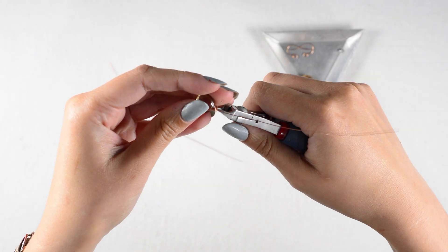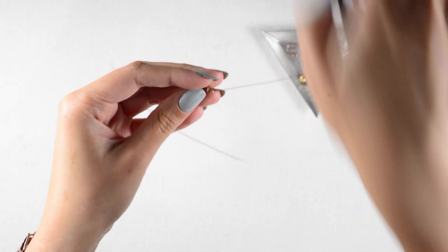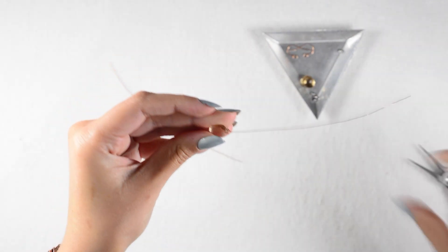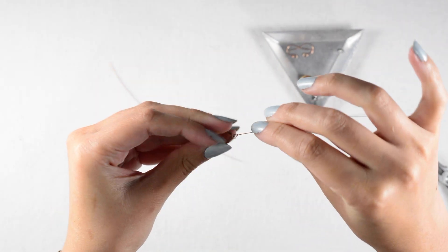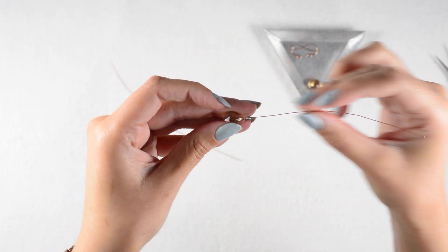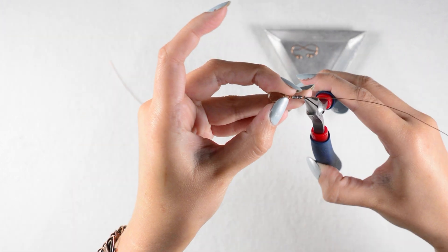I'll cut off any excess wire I have after about two wraps and tuck my tail in. I'll then thread on two of my four beads and just a millimeter above that top bead, I'll create a 90 degree bend.